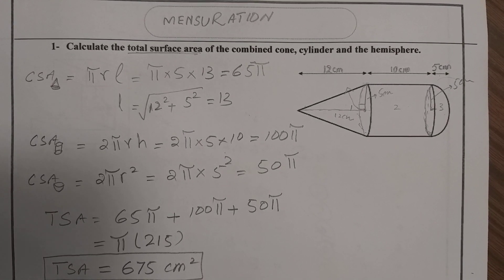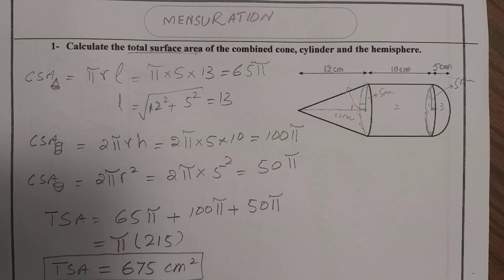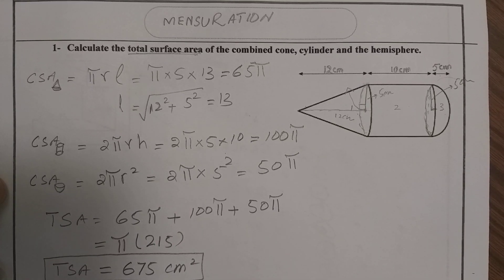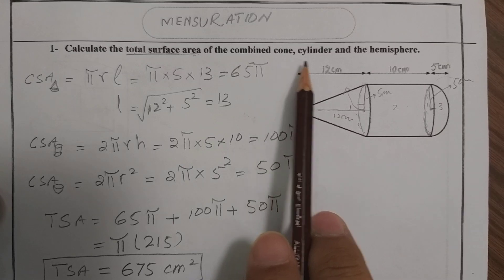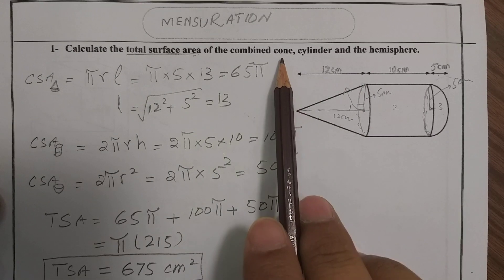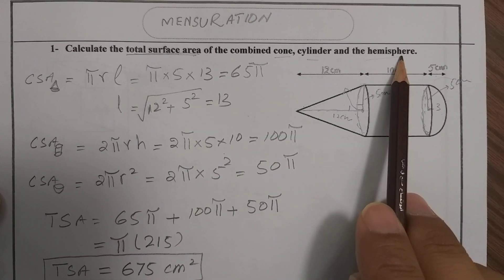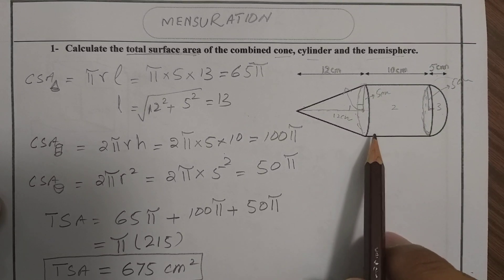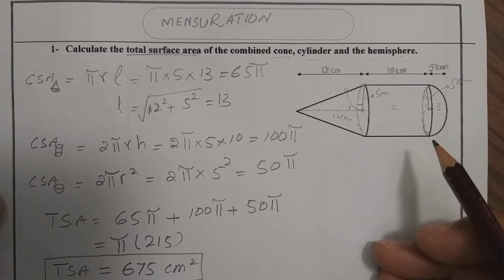Welcome viewers on G Math Academy. Today we are going to talk about the surface area of combined objects. We are given the combination of three objects: a cone, a cylinder, and a hemisphere. We need to find the surface area of them.